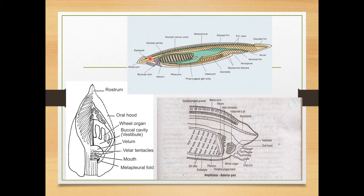On one side there is a small pit called the coliculus pit, also known as the olfactory pit, which serves sensory perception. This is located below the anterior pointed end.